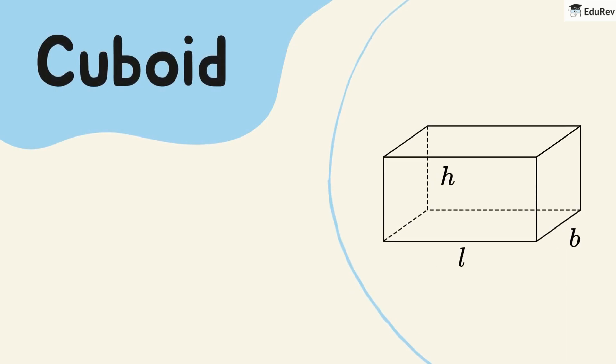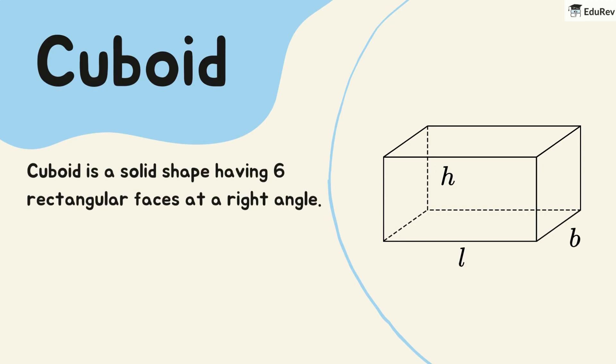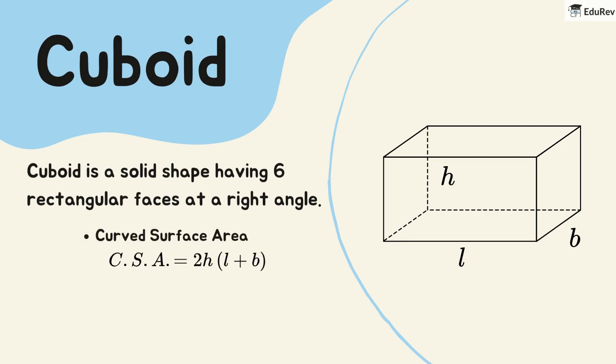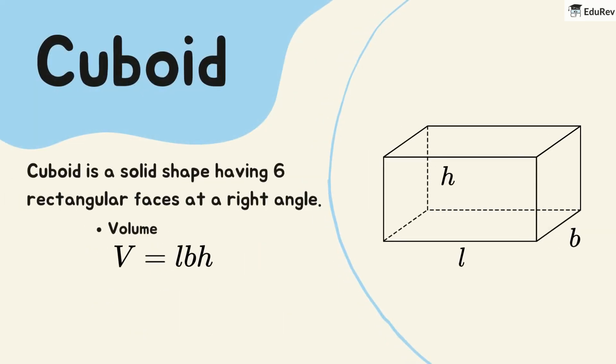Next, we have the cuboid. A cuboid is a solid shape with six rectangular faces at right angles. Its curved surface area is twice the sum of the length and breadth, multiplied by the height. The total surface area is twice the sum of the products of length and breadth, breadth and height, and height and length. The volume of a cuboid is the product of its length, breadth, and height.